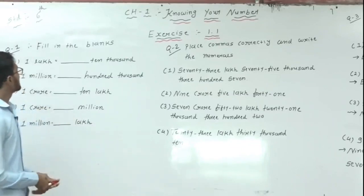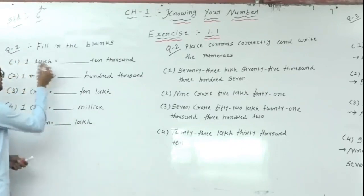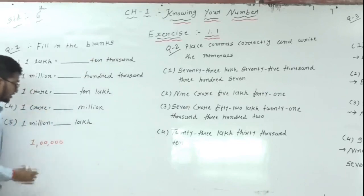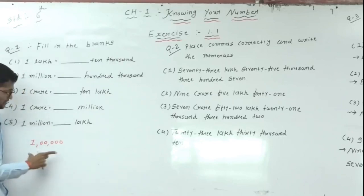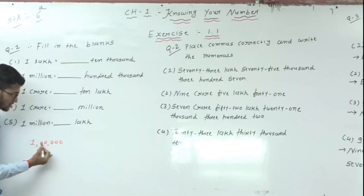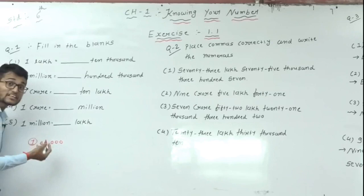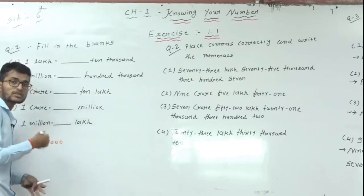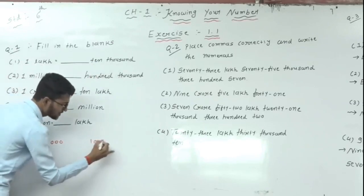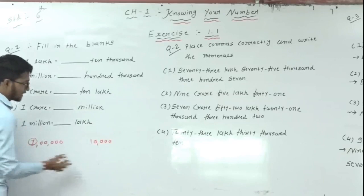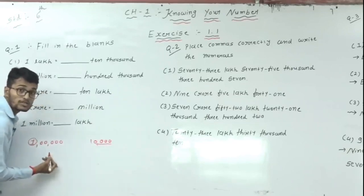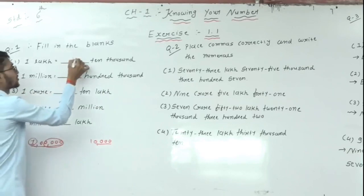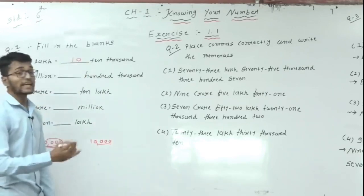So how to complete this blank? Simple. Here is 1 lakh and on this side 10,000. We all know 1 lakh has 5 zeros: 1, 10, 100, 1000, 10,000, lakh — that's the Indian system: 1, 10, 100, 1000, 10,000, lakh, 10 lakh, crore. And 10,000 has 4 zeros. So here there are 4 zeros and on this side 5 zeros — remaining is 1 zero, meaning 10. So the blank answer is 10: 1 lakh is equal to 10 × 10,000.